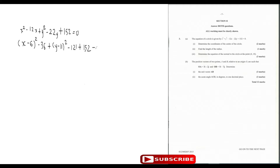Putting this in standard form, we get (x minus 6) squared plus (y minus 11) squared. Then we have minus 36 minus 121 plus 152, which we bring to the other side and it equals 5.